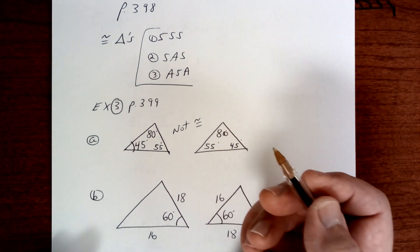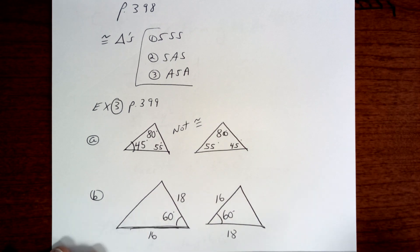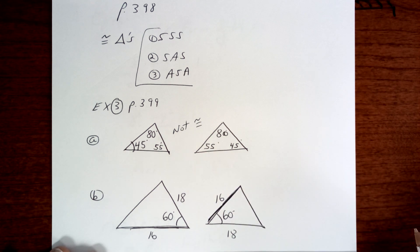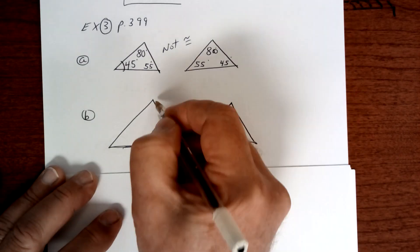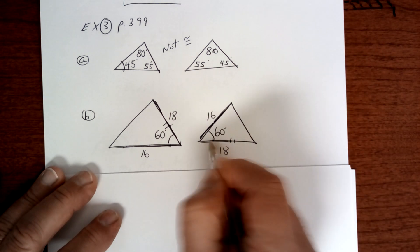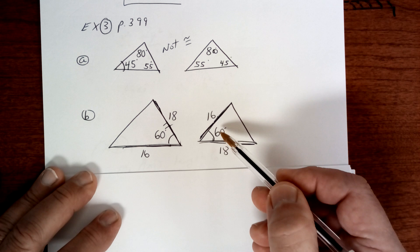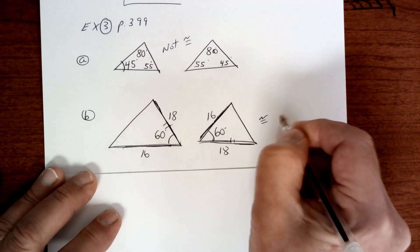This one right here — notice that you have a side equal to this side, then you have an angle, the same angle, and then you have another side equal to this side. So this would be called side, angle, side. These are congruent by side, angle, side.